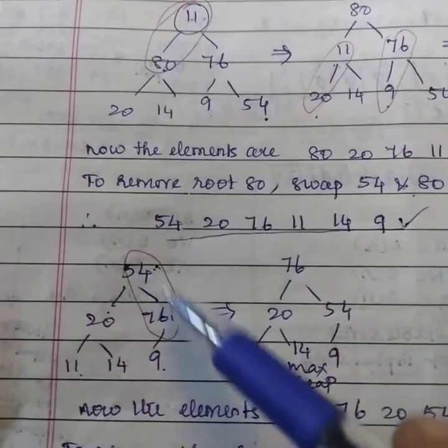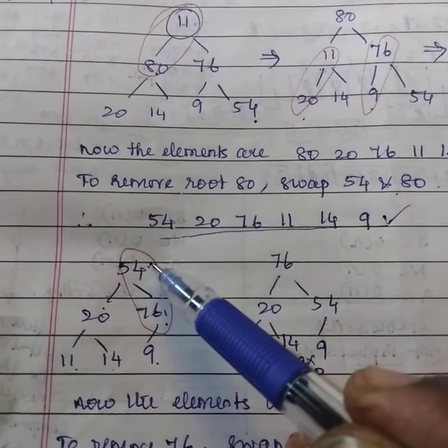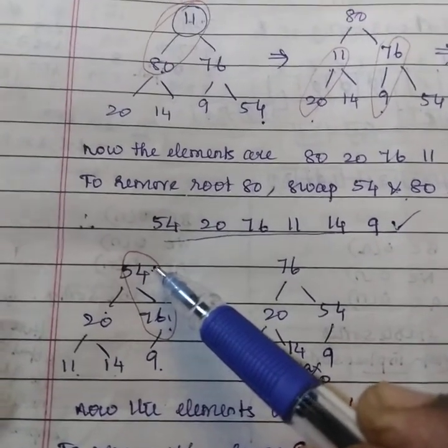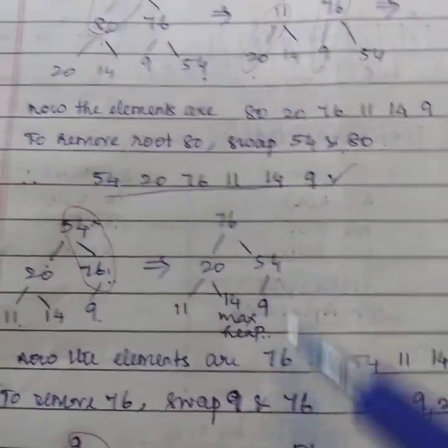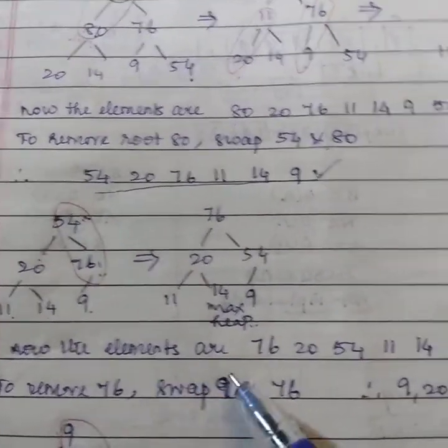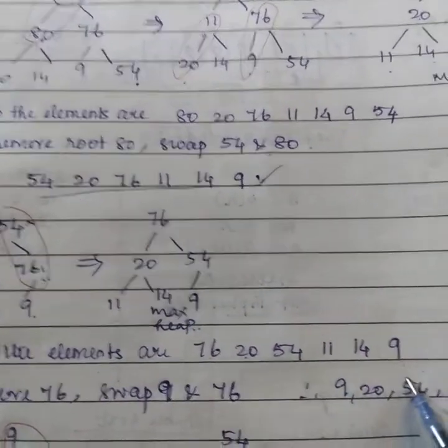Again, you need to interchange as the parent value node must have the greater number. So interchange these two. So interchange these two and this will be the max heap. So write down the elements. Now the elements are 76, 20, 54, 11, 14 and 9.